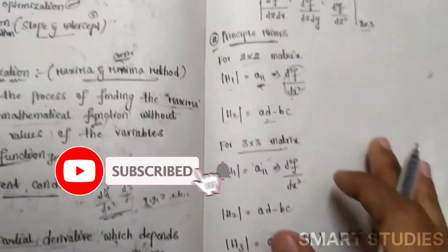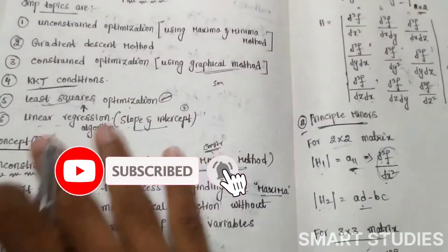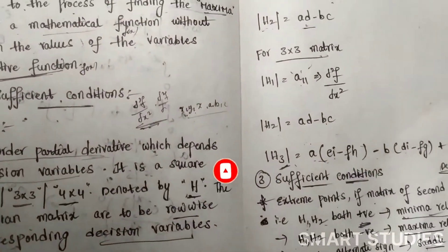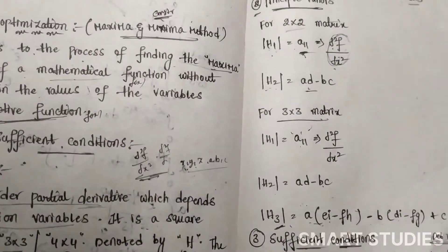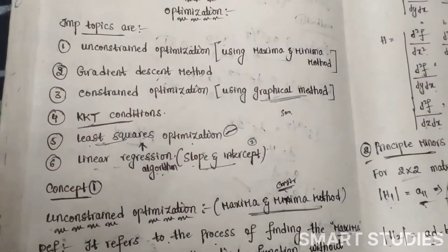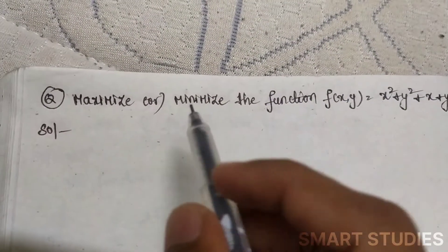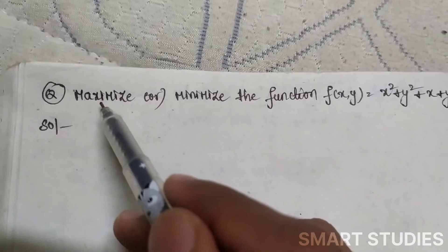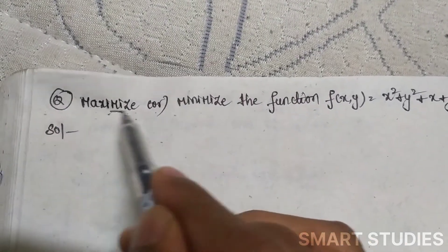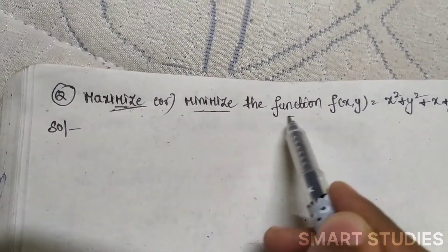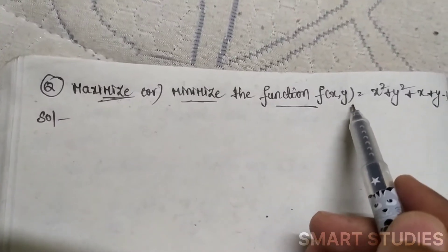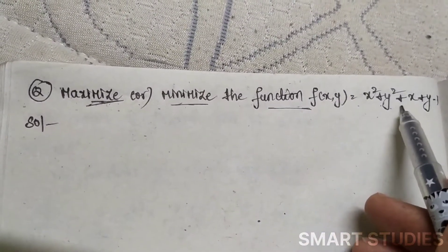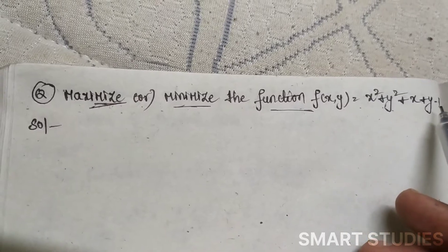Let us understand all these concepts — Hessian matrix, principal minors, and sufficient conditions — by doing one example problem. The given question is: maximize or minimize the function f(x, y) = x² + y² + x + y − 1.